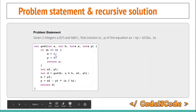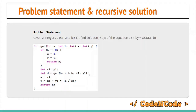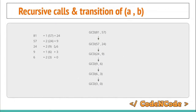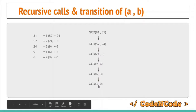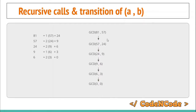Now let's derive the formula. Using the example a=81 and b=57: 81 = 1×57 + 24, then 57 = 2×24 + 9, and so on. When you make recursive calls — from (81,57) to (b, a mod b) — this continues until b equals zero, at which point the function returns 3, which is the GCD. The value 3 propagates back up through each recursive call to the main function.